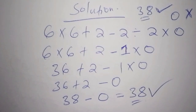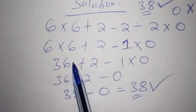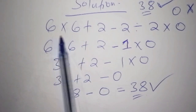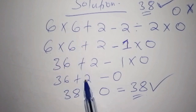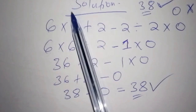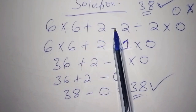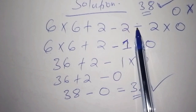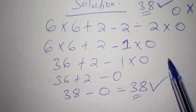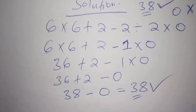Someone who got the answer zero had started by multiplying incorrectly. For example: you work out six multiply by six and get 36, then 36 plus two gives 38, then 38 minus two gives 36, then 36 divide by two gives 18, then 18 times zero gives zero. That is not how it is worked out.